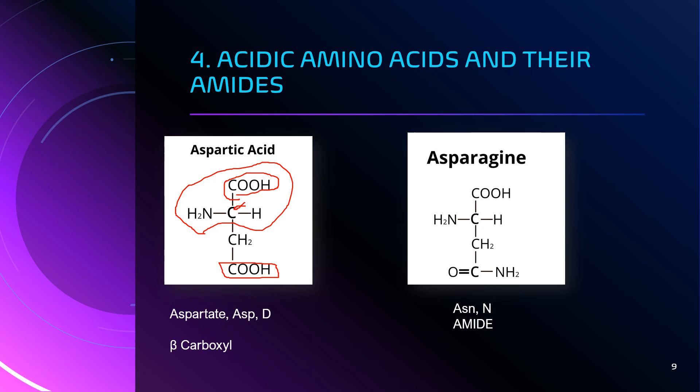The amide of aspartic acid is asparagine, where instead of a CO-OH group, we have a CO-NH2 group. Asparagine is represented as ASN and the single-letter code is capital letter N.